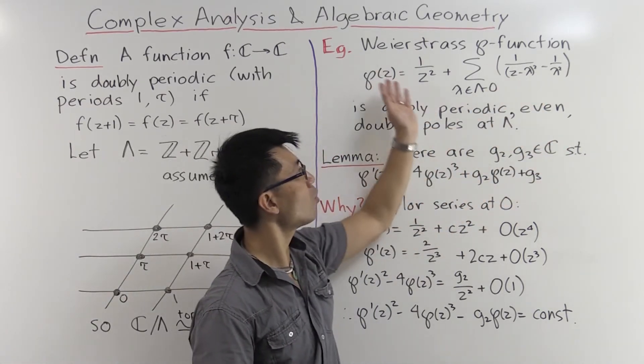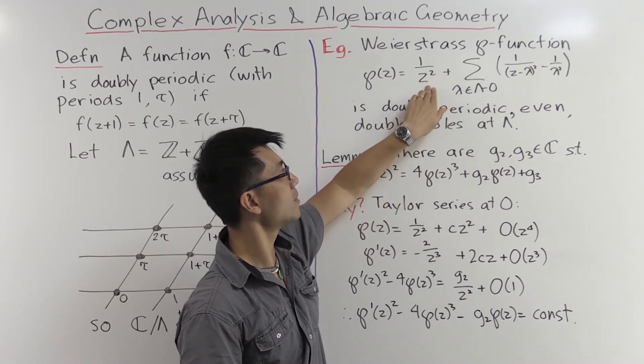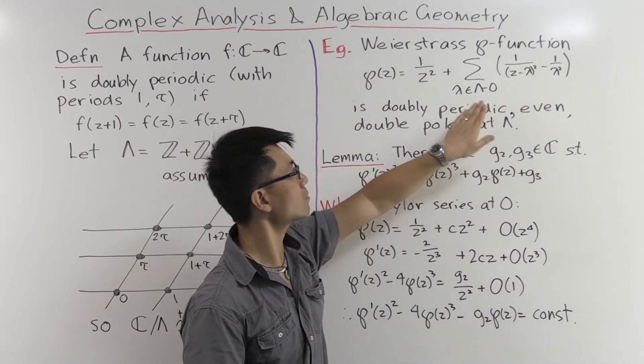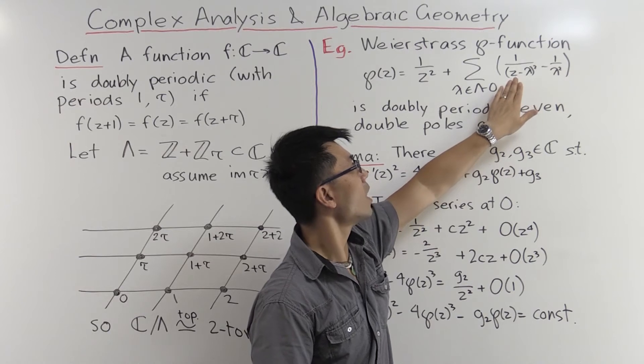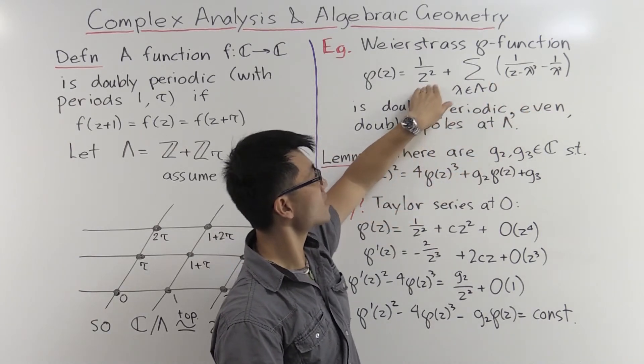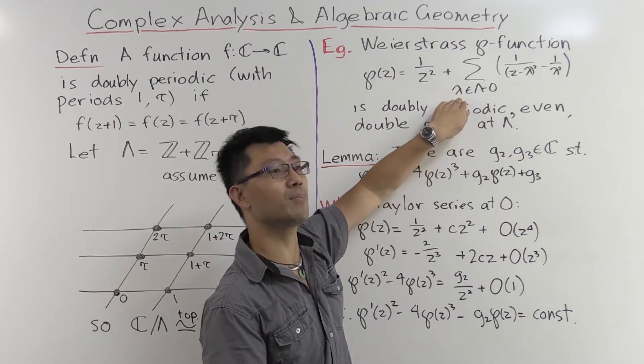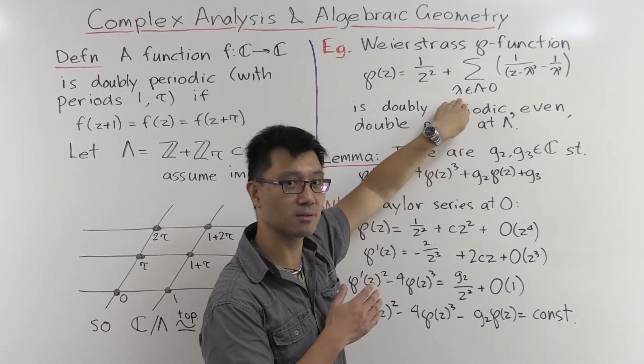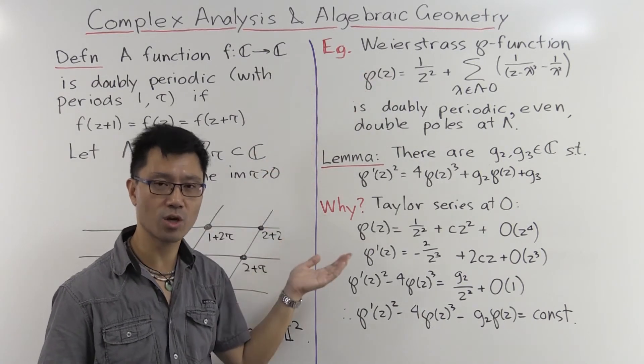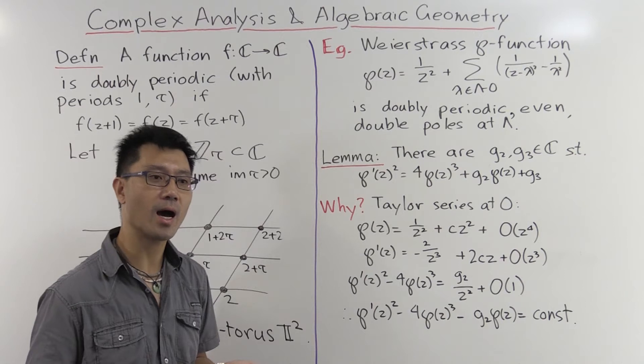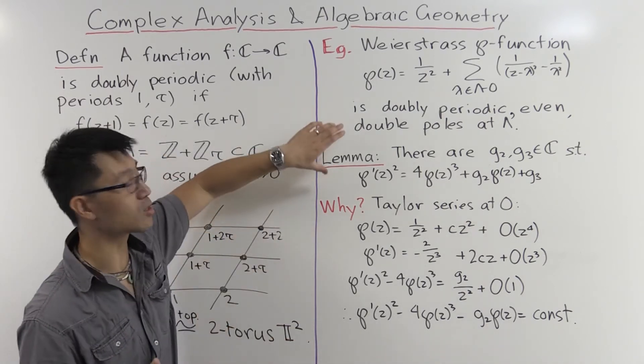That's the first interesting thing about this function, but there are other interesting things about this function as well. So in some ways this is the easiest such function to consider because the poles involved are very simple. So as you can see there are double poles at zero and also at all these λs, and here λs are the non-zero elements in this lattice Λ. But other than those double poles, it's an analytic function everywhere else. The other thing that's nice about this is if you look at all the terms here, they only involve squares or powers of the squares of z or z-λ. So it turns out that this is an even function.